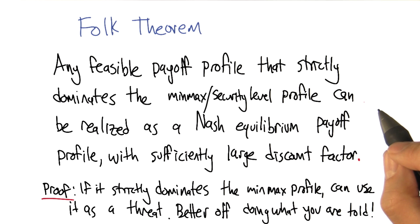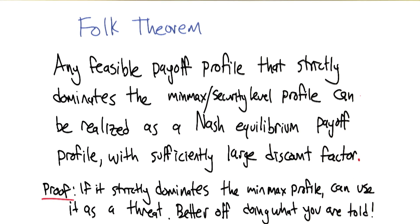Hey, could you try saying that again, but with like a southern accent? Just the folk theorem part? Any feasible payoff profile that strictly dominates the minmax security level profile can be realized as a Nash equilibrium payoff profile with sufficiently large discount factor.